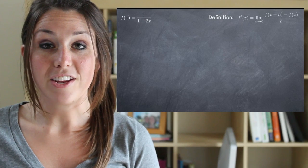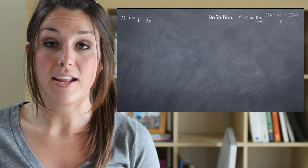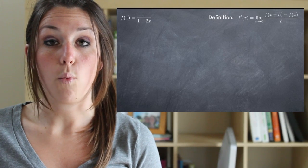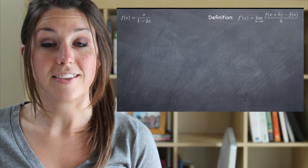Before we wrap up today, let's take a look at one example. The problem says we need to use the definition of the derivative to find the instantaneous rate of the function f of x equals x divided by the quantity 1 minus 2x, when x is equal to 1.